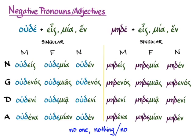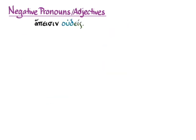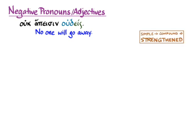So let me show you a few examples of these compound negatives in use in sentences. Apesin oudeis — that means 'no one will go away.' You will also see an ouk in front of that, and it still means 'no one will go away.' When you have a simple negative — just me, or just one of the forms of ou — before a compound negative, the force of the negative is strengthened.